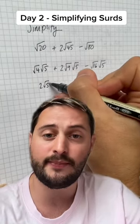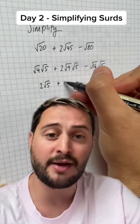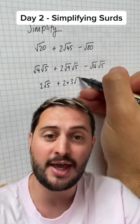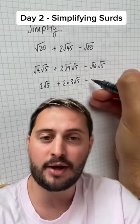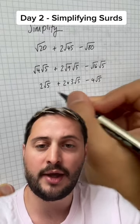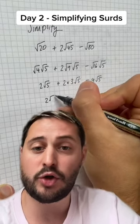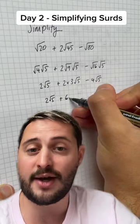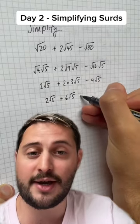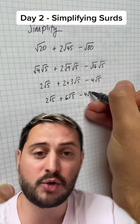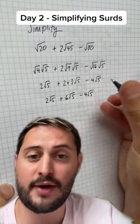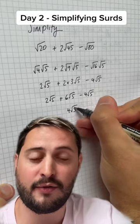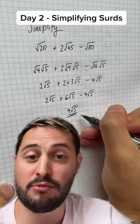Now root 4 is 2, and we're going to have root 9 here which is 3, and in the last part root 16 is going to be 4. So I've now got 2 root 5, 2 times 3 root 5 which is 6 root 5, and subtracting 4 root 5. 2 plus 6 minus 4 is 4 root 5.